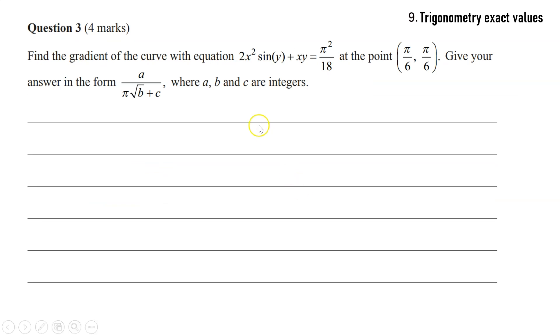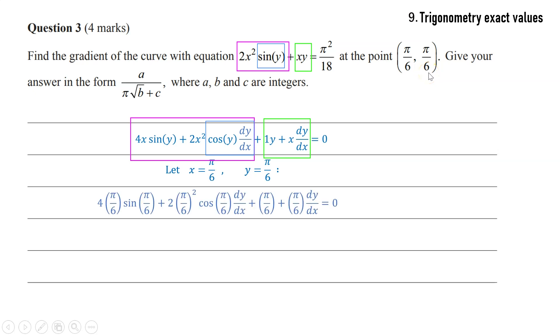This is a calculus question. We need to find the gradient of this curve at a certain point. You might recognize we need to use implicit differentiation. We'll need a product rule for that first product of terms and actually a chain rule inside that product rule to differentiate the sine of y, and then we'll need another product rule for the second product x times y. Now we want to sub in x equals π/6, y equals π/6.